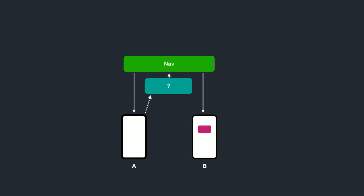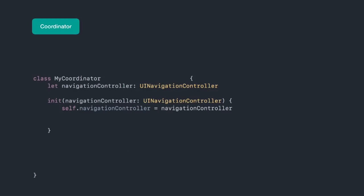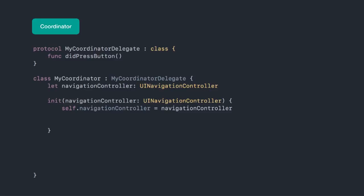This object will own the navigation controller, respond to events generated by A, and know how to create B. We'll have one place for dependencies to live, controlling the flow. This object is often called the coordinator — search for the coordinator pattern and you'll find lots of literature and blog posts, sometimes also called a flow controller. These are easy to write: just a simple class. We create one, pass it a navigation controller from a storyboard, and use a weak reference from view controller A to the coordinator via a protocol. The view controller will have a coordination delegate property.